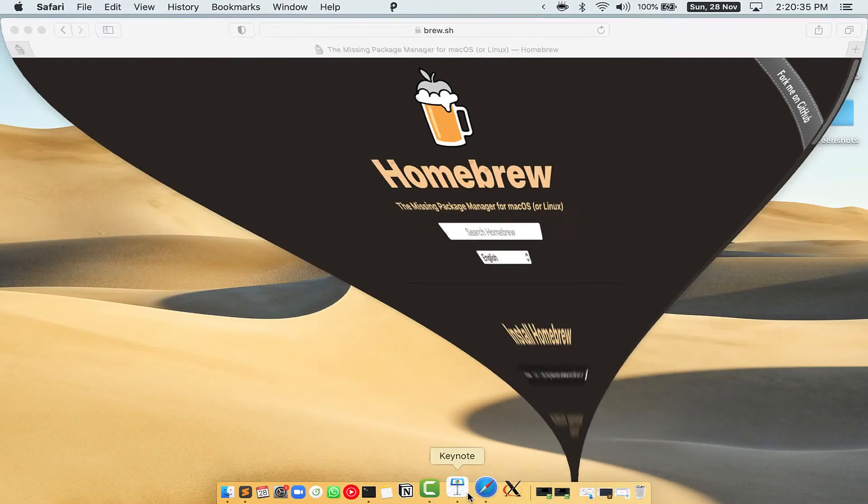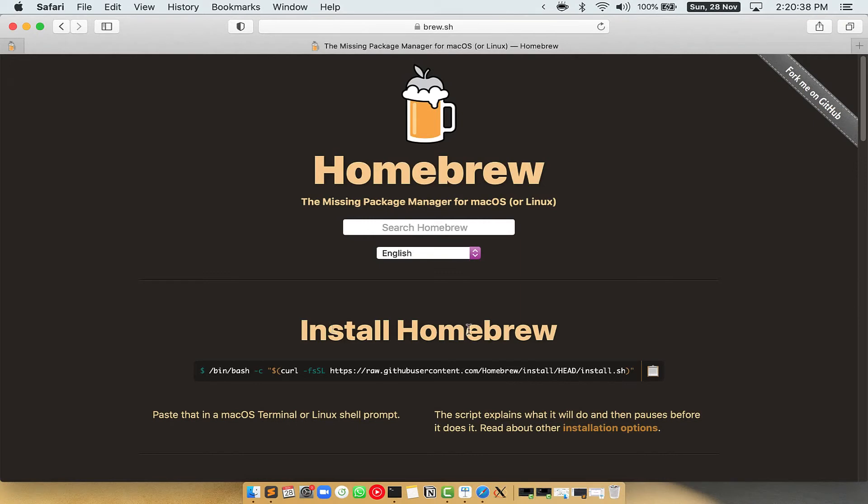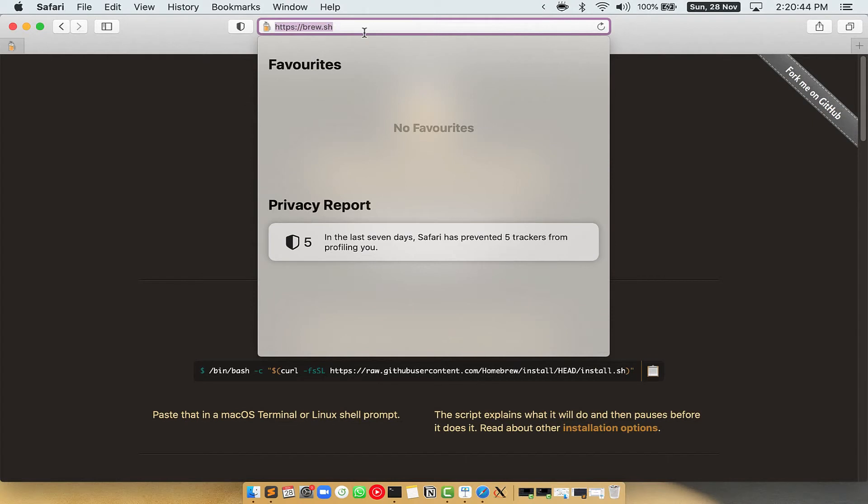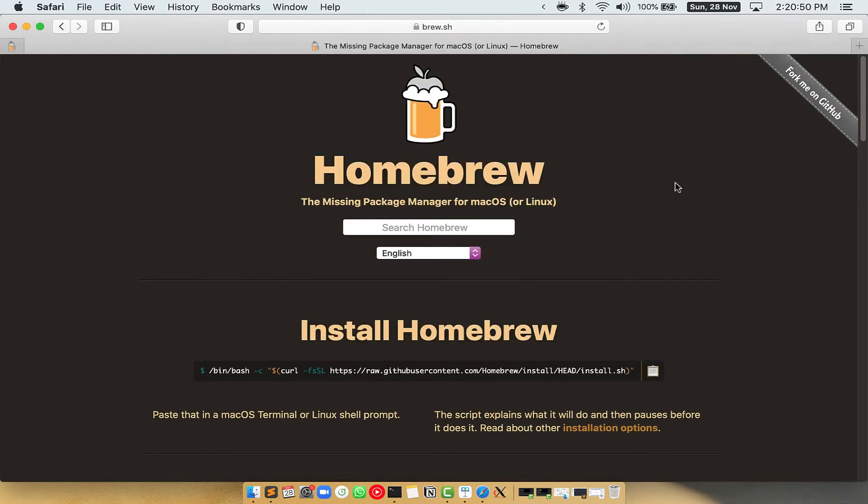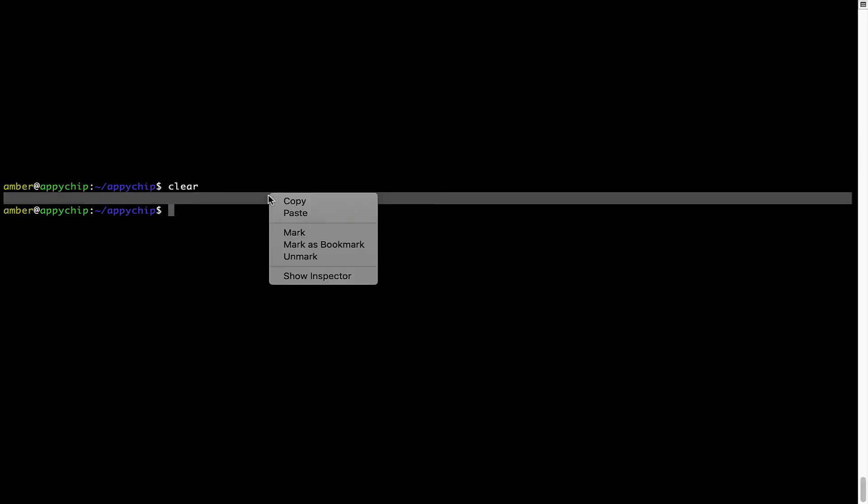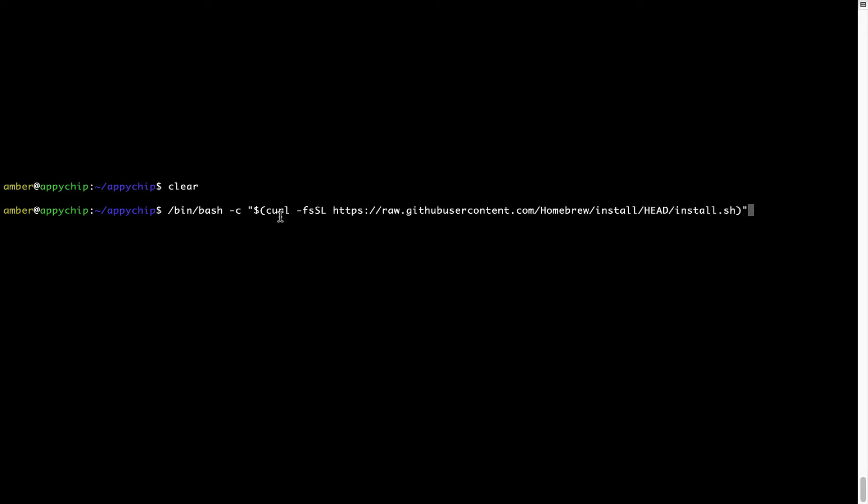Now we need to copy paste the command to install homebrew from the brew website. So open your web browser and simply go to the website brew.sh. Once you are on the website, you will see this section called install homebrew, which has a command that you can simply copy by clicking on this button over here. Once it is copied, you have to go back to terminal, right click, paste. Now that the command is copy pasted onto this terminal, press enter.